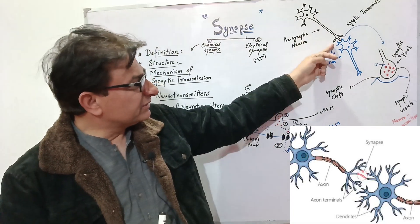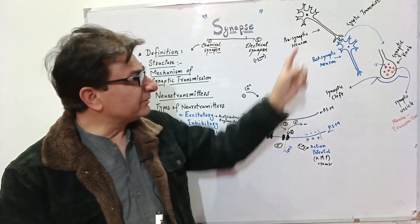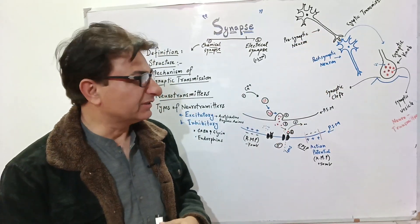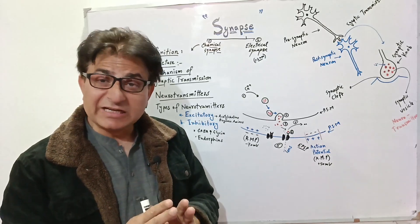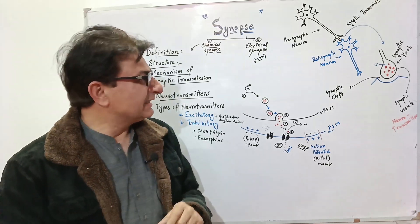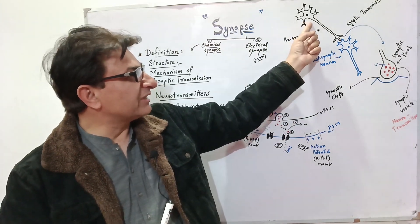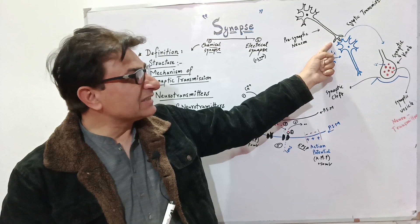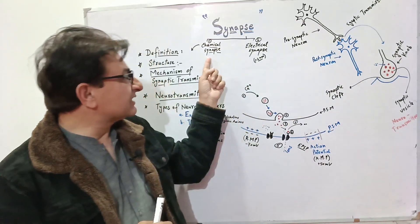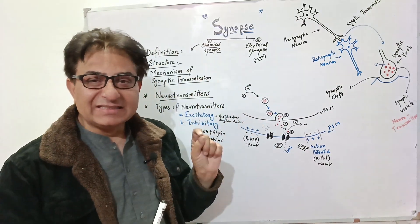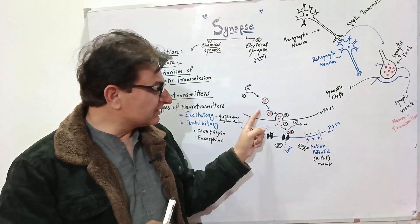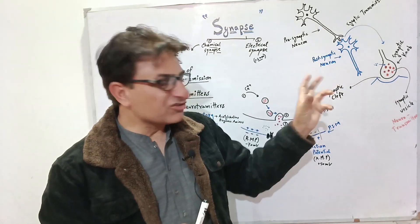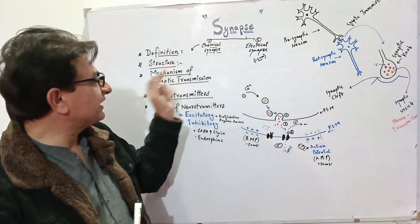The neuron before the synapse is called the pre-synaptic neuron, and the one after is called the post-synaptic neuron. This junction occurs between the pre-synaptic and post-synaptic neurons. The action potential that travels along the neuron cannot jump from the pre-synaptic to the post-synaptic neuron. In a chemical synapse, chemicals are needed to transfer this information.